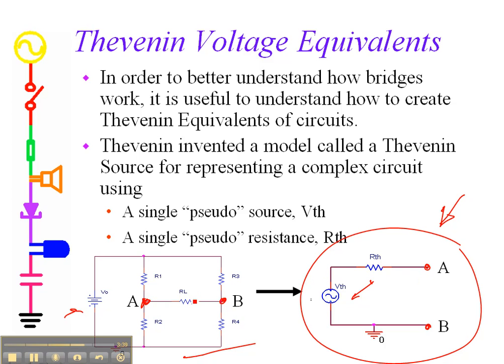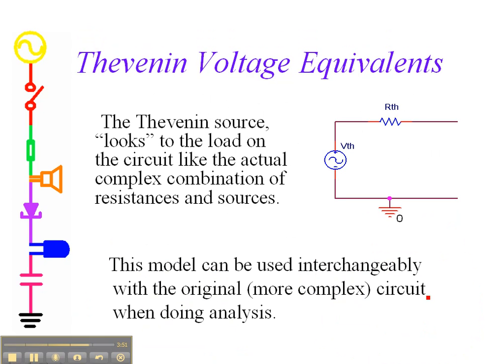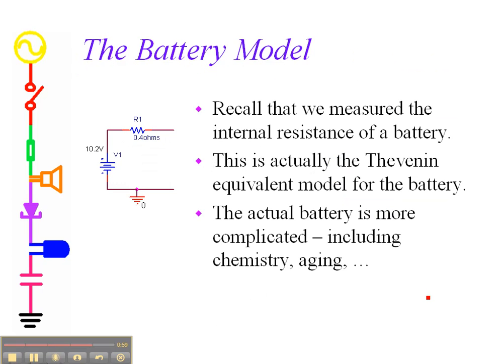In the open circuit case, where this goes to infinity so it's open, if we measure the voltage across here, that voltage should be the same as the voltage between A and B. This is our Thevenin source. It looks to the load on the circuit like an actual complex combination of resistances and sources. We've done this previously with the battery where we measured the open circuit voltage and the resistance by finding the current passing through a known resistor.